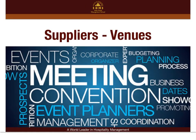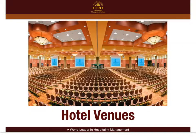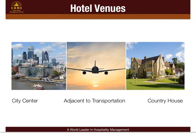Let's look at the first part: the venues. We can classify hotel venues as hotels close to the city centre, hotels close to any transportation links, and hotels in the country, like country houses. Different MICE events have different purposes, which therefore need different venues.